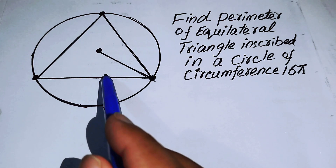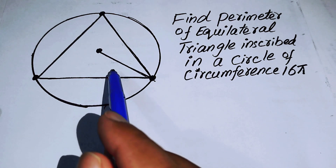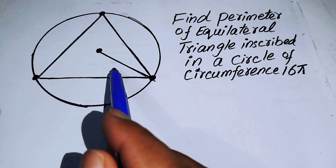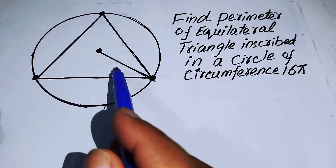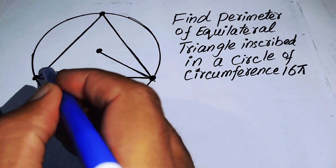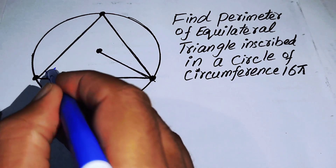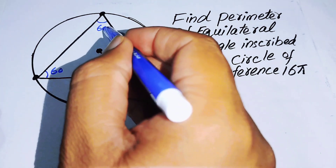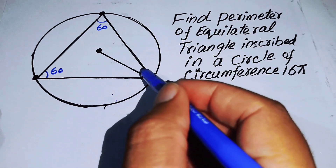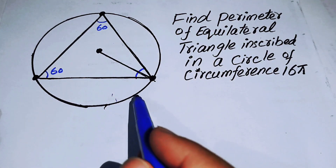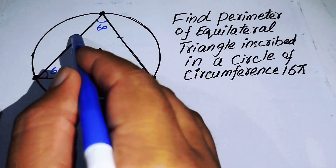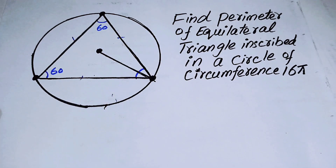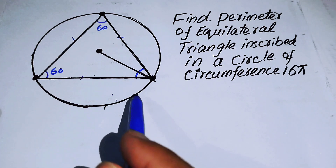You know about the equilateral triangle — it is a triangle whose all three angles are 60 degrees. Also, all three sides are equal in length because this triangle is equilateral.